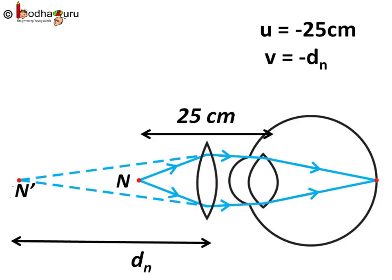Here, the object is between point n and point n dash. Say, it is at point n. So, u is equal to minus 25 cm which is the near point of the normal eye.